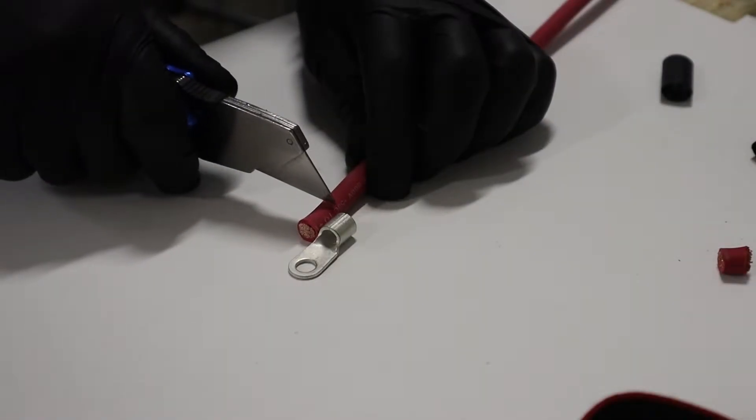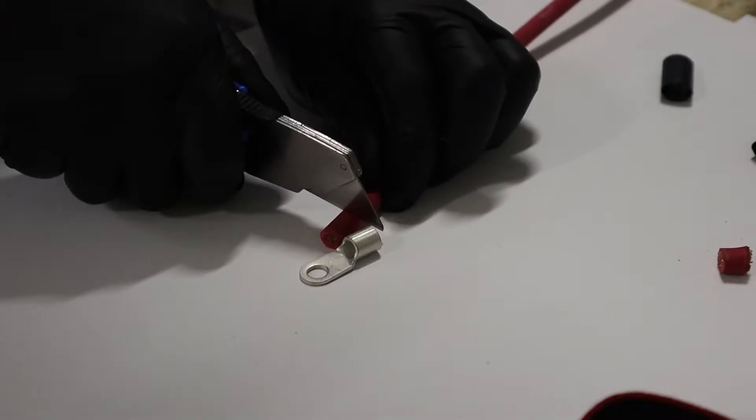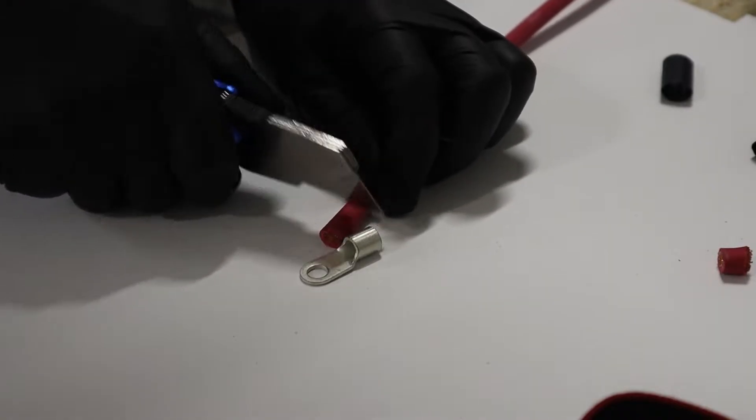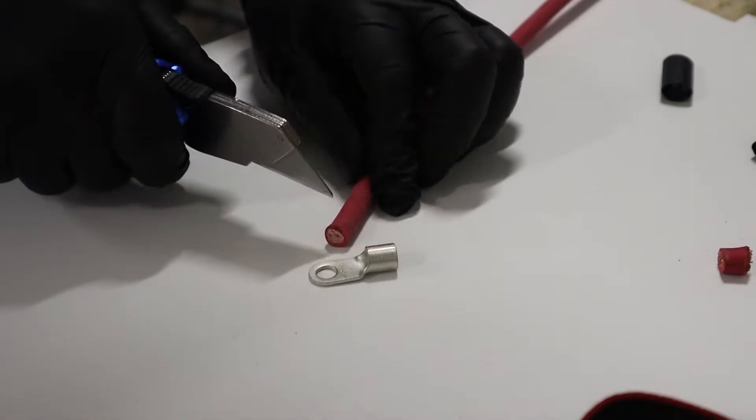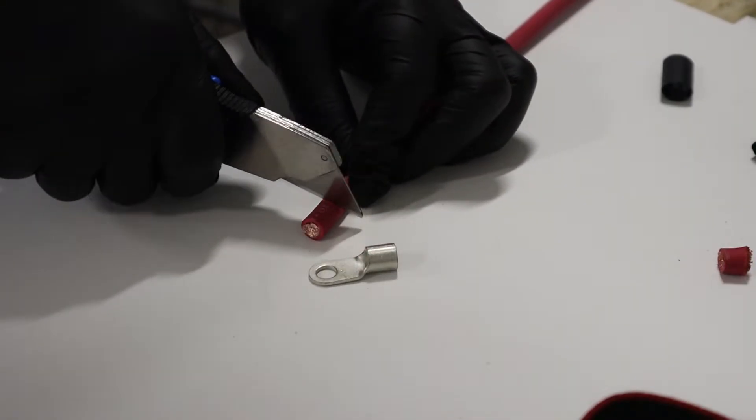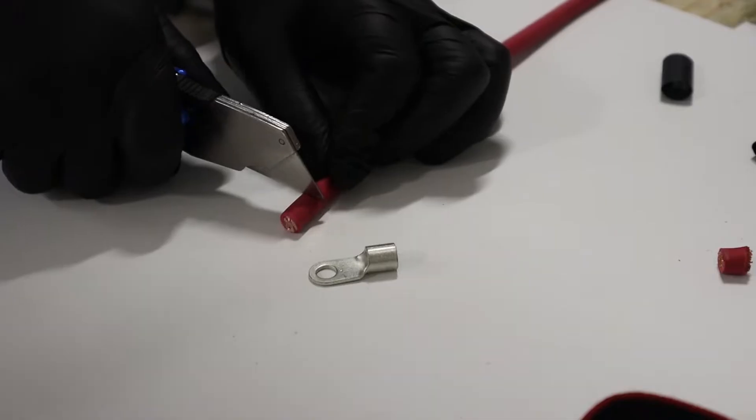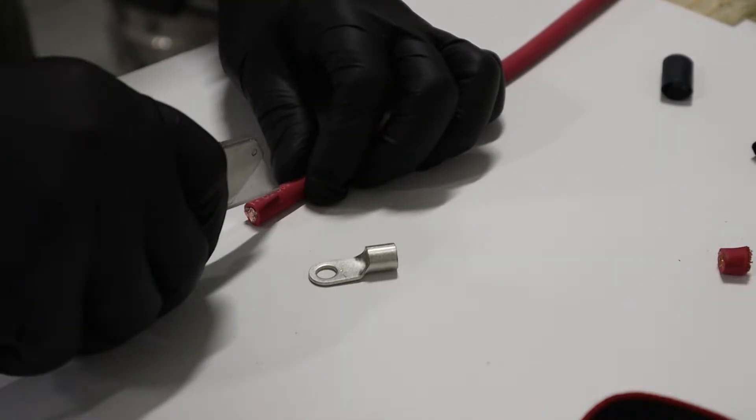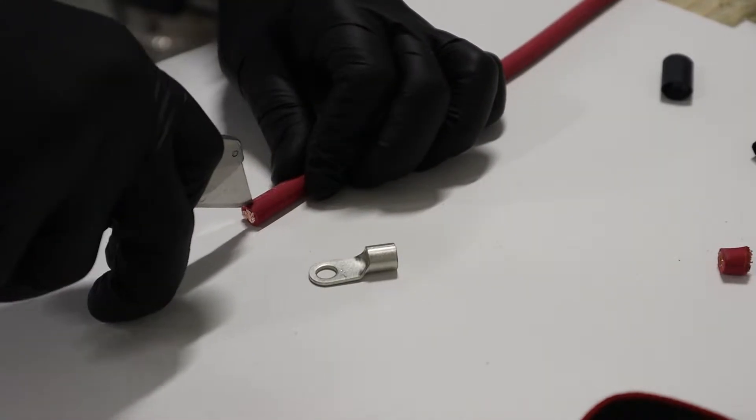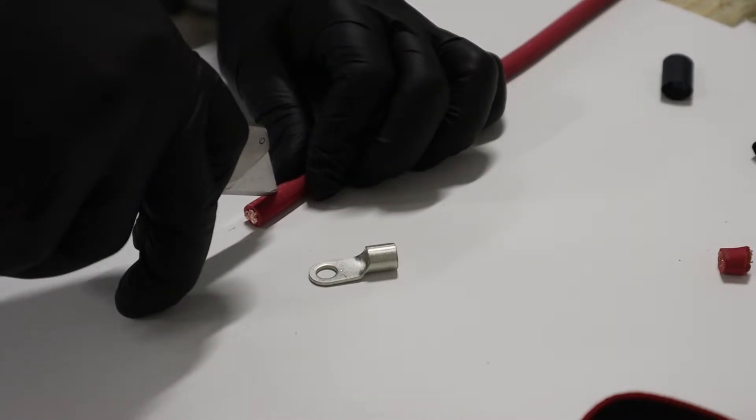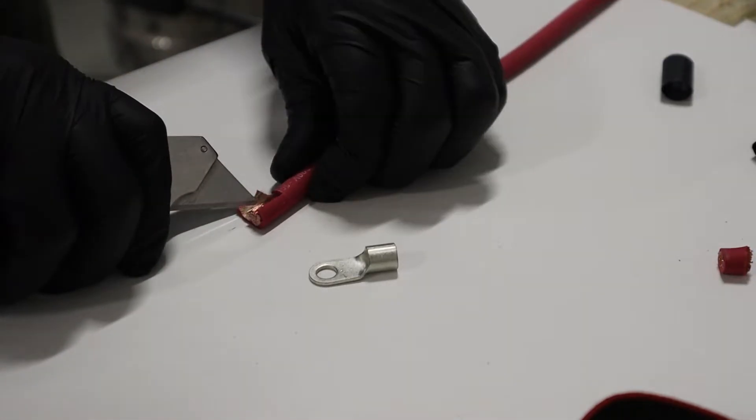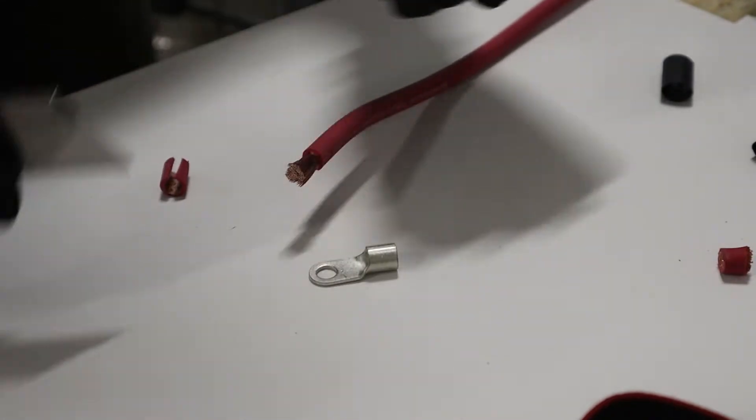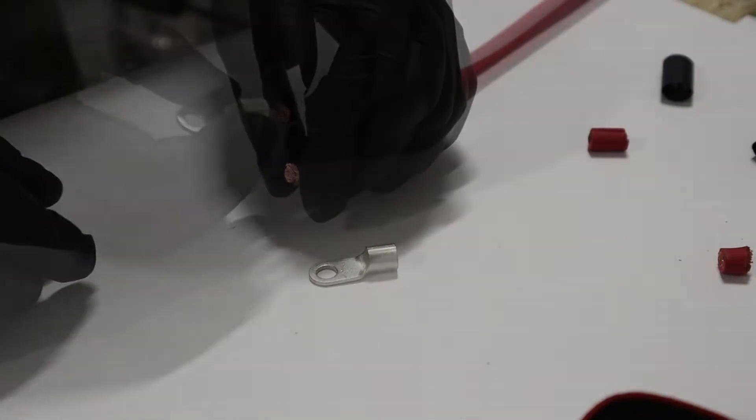So here's our wire, it's a 4 gauge wire. We're just going to trim the ends of it to get the plastic coating off. Very carefully using an Exacto knife, so we don't nick any of the wires inside. And once the cover is off, we'll put the connector on.